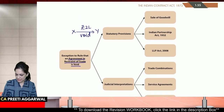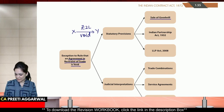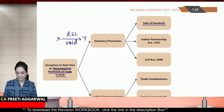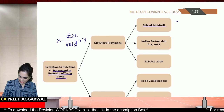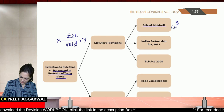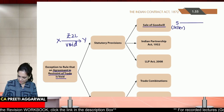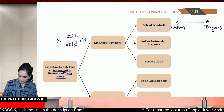Sab se pehla exception hai in case of sale of goodwill. Goodwill kya hota hai? Goodwill is nothing but the good name, reputation of the business. Now let's say ki S, seller hai. Isne apna business B, buyer ko bech diya. Let's say ki yeh ek gold jewelry ka business tha.